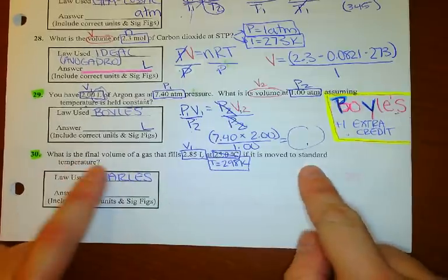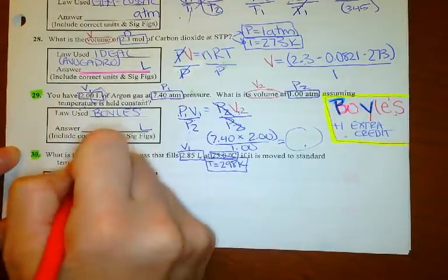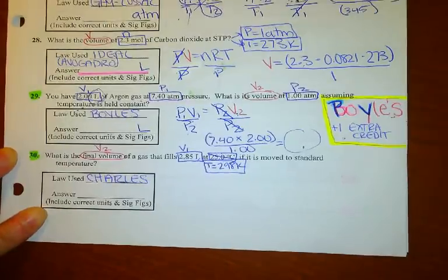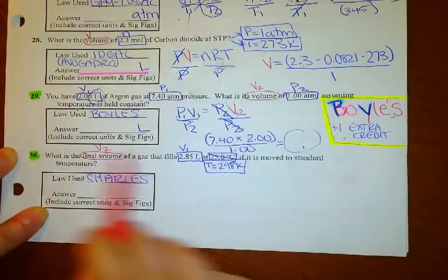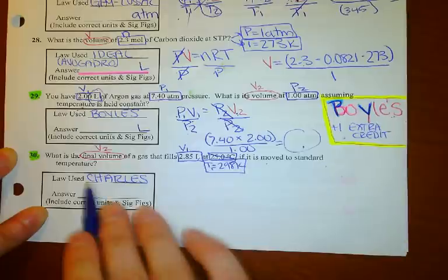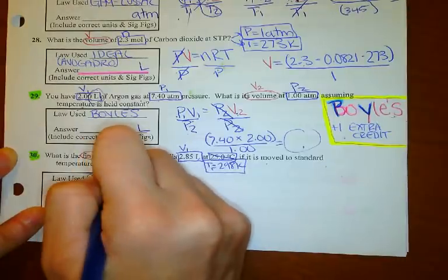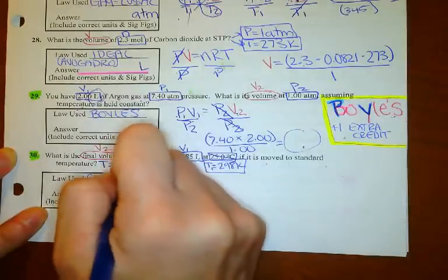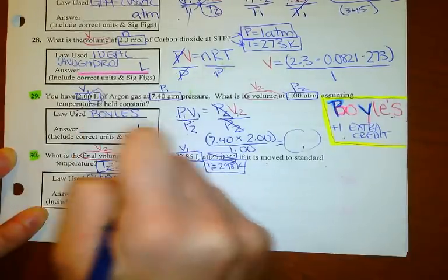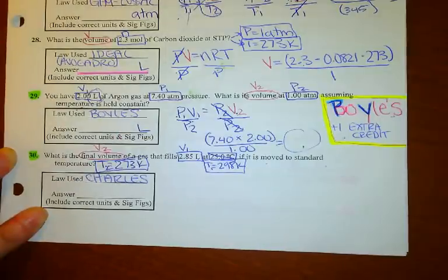It says it's moved to standard temperature, asking for the final volume — that's V2. A lot of times students get stuck, but they did give you T2 — we're moving it to standard temperature. Standard temperature on the back of your periodic table is zero degrees Celsius, which equals 273 Kelvin. So T2 is 273 K — they just make you work for it a little bit more.